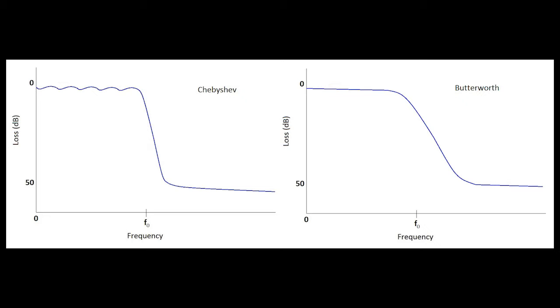That ripple in the stop band is the bad side of the elliptical function. The good side is that the transition from the pass band to the stop band is very abrupt, which is a good thing for filters. Then finally, the Gaussian transfer function is more similar to the Butterworth, and it has a transition that is very wide and spread across a lot of frequency.